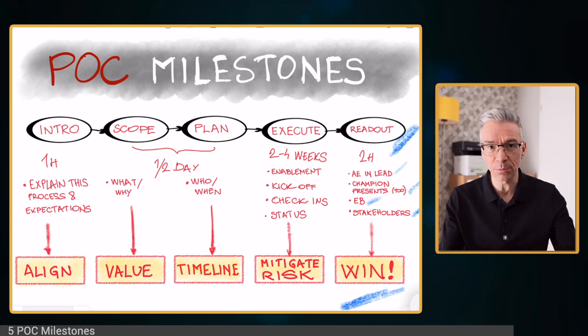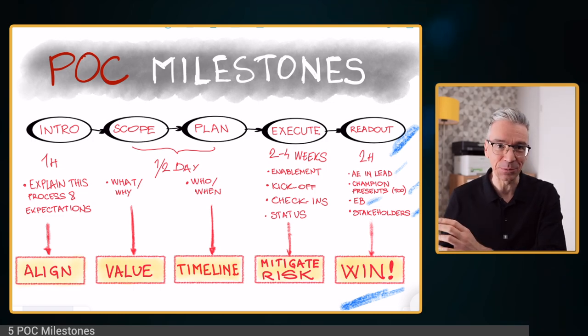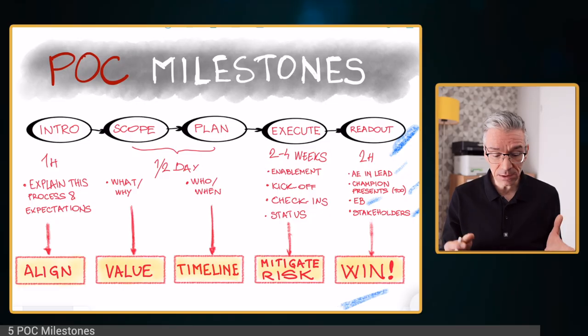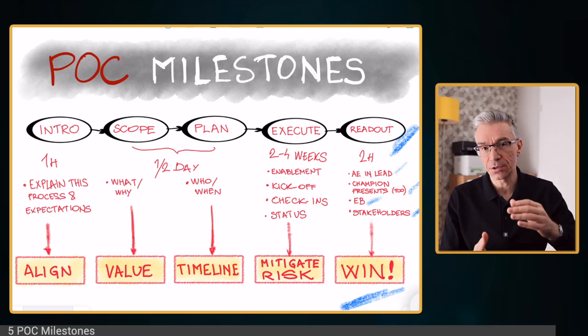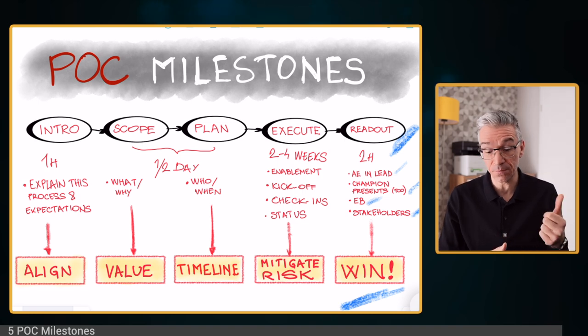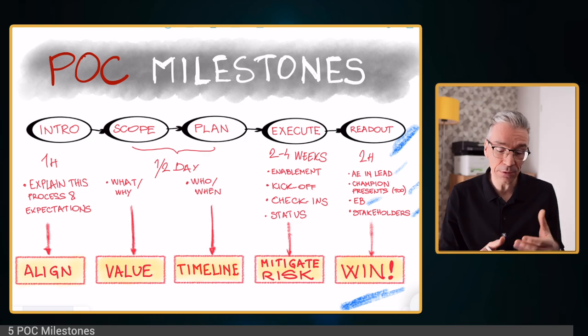The overall goal, of course, is to demonstrate the win — to demonstrate that our product does indeed deliver what was promised in the slides before the POC. Those are the five milestones, and this is what really scales. There's not a lot of involvement — you have the intro kickoff, a half-day workshop, periodic check-ins, one or two hours of enablement, and two hours of the readout. If you calculate all that, it's maybe two days of your own work to deliver a POC win. This is repeatable and scalable.